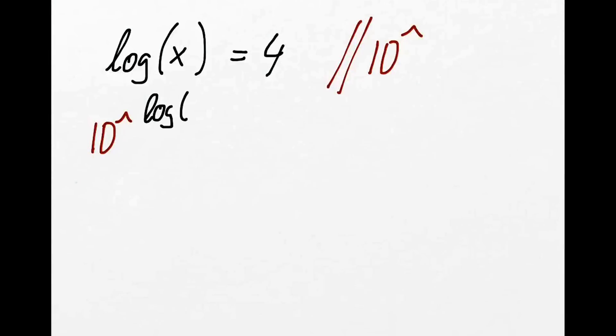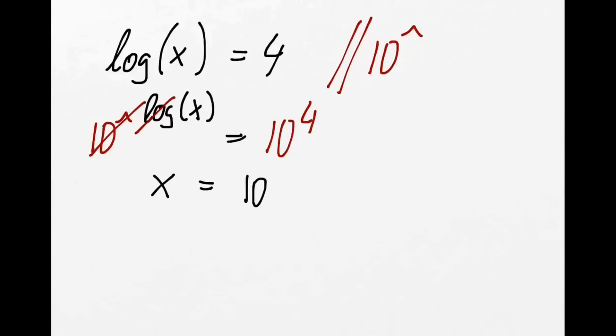Here's another one, and now we need to use a different approach. We have log x equals 4. We make use of our knowledge that log and '10 to the power of' cancel each other out, so what we do is take both sides '10 to the power of': 10^(log x) equals 10^4. The 10 and log cancel out, so we've got x equals 10^4, which gives us 10,000.